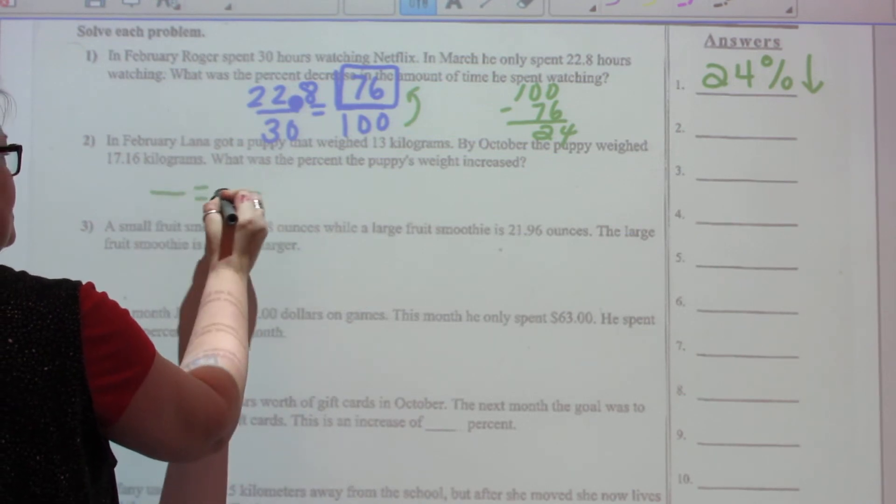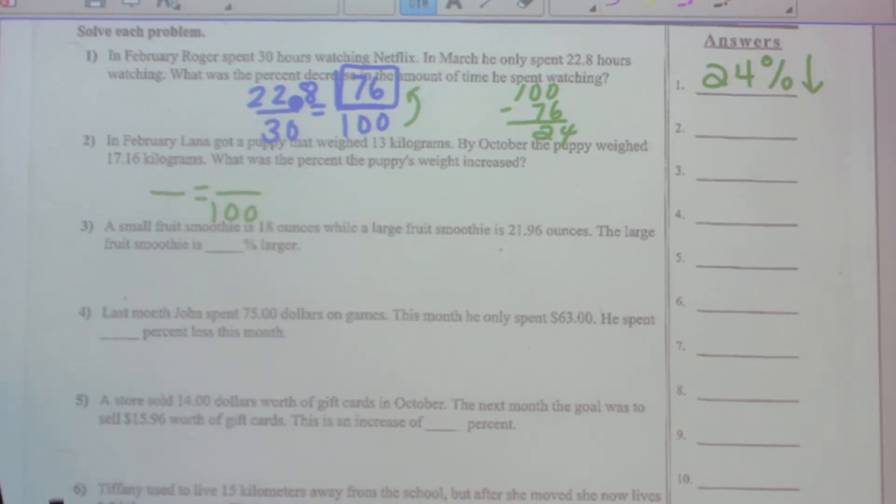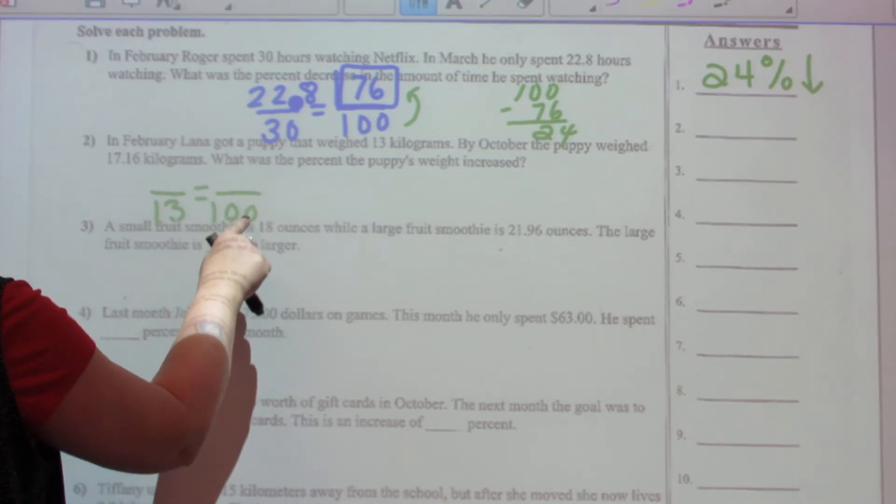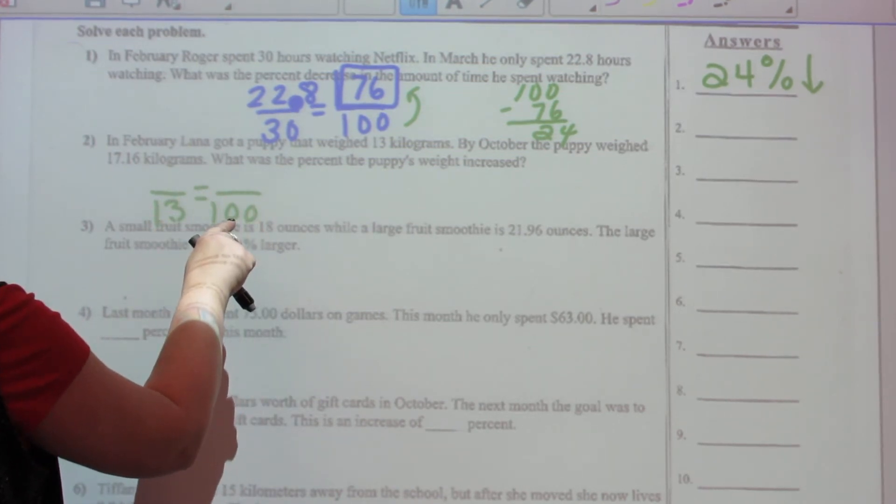Again, I see that it's a percent problem, so immediately going to set up my proportion that I know I'm going to use. The puppy's original weight is 13. 13 represents his original weight or a hundred percent of his weight.